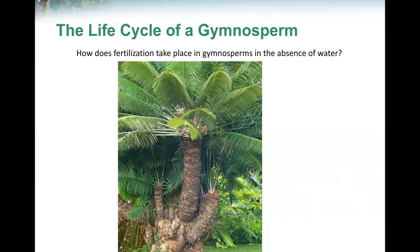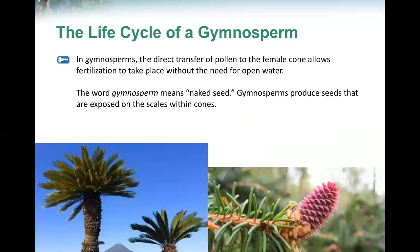In gymnosperms, the direct transfer of pollen to the female cone allows fertilization to take place without the need for water.